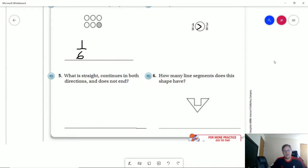Number five, what is straight, continues in both directions and does not end? It would be a line. So if we draw a ray, we start with an endpoint. If we have a line, we have no starting and ending point, and it goes in both directions forever.